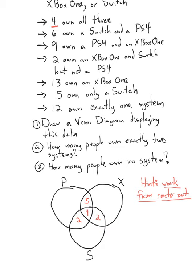Now it says 13 own an Xbox One — that's this circle here. There have got to be 13 people in total inside of it. We already have five plus four is nine, plus two is 11 people. So we must have an additional two people in that other region. There are four regions in here, and we knew three of those regions. We had the overall total, so we could figure out how many need to go in that last region. There must be two because this has to add up to 13. These two own only an Xbox One, and the other 11 own some other systems as well.